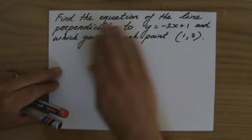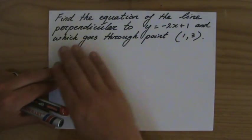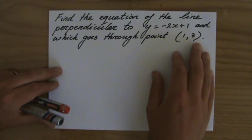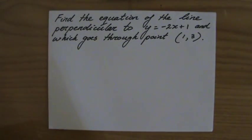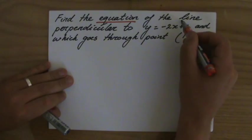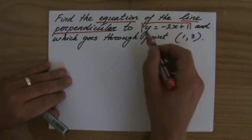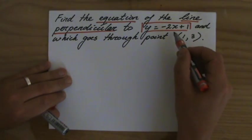Find the equation of the line perpendicular to y equals minus 2x plus 1 which goes through point (1, 3). So we need to find the equation of a line that has to be perpendicular to this line and has to go through a particular point.